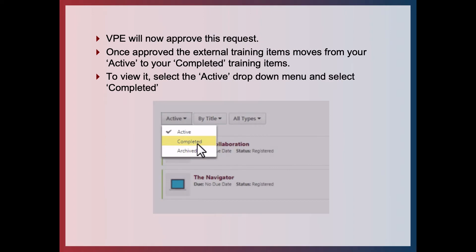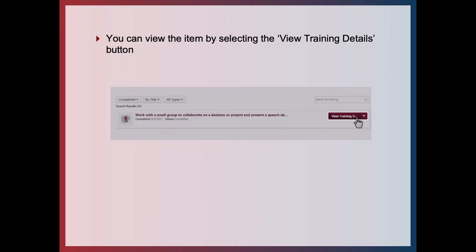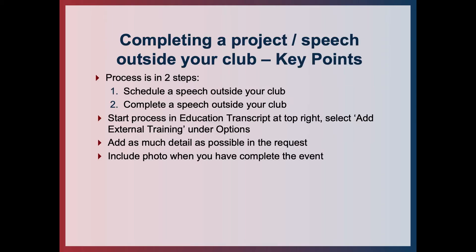Once the approval has gone through, your item will move from Active to Completed training items. In your Education Transcript on the left hand side you can see the Active drop-down — if you select this and move to Completed, you can see your item now in the completed list. You can select the View Training Details button to see the details and the comments left by your vice president education.